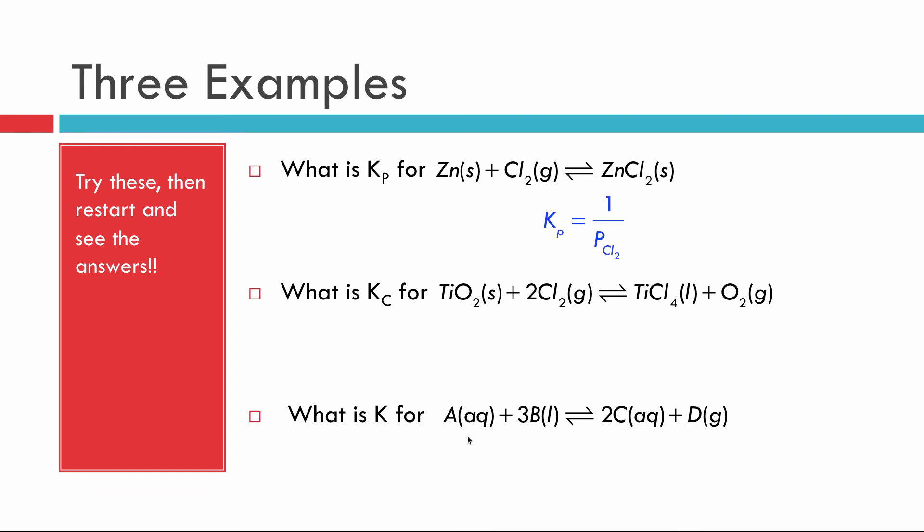And the first one, so the solids are not zero. That's one of the biggest mistakes. They're not zero. They're just ignored. And so kind of think of them as one if you have to, if you need a shortcut. So one over the pressure, the partial pressure of the chlorine gas.